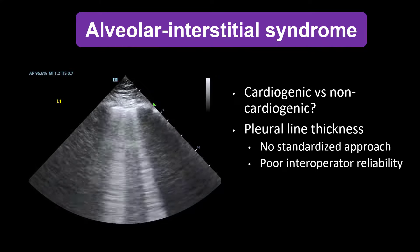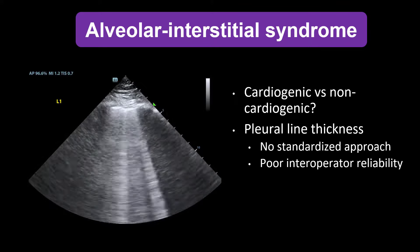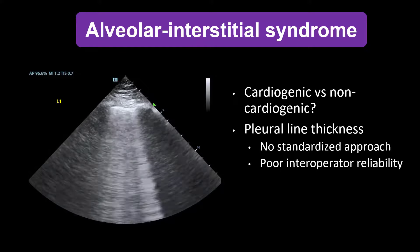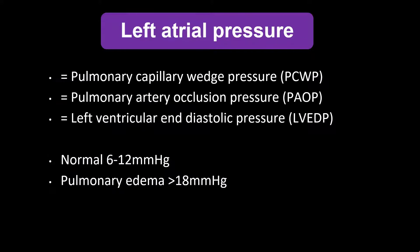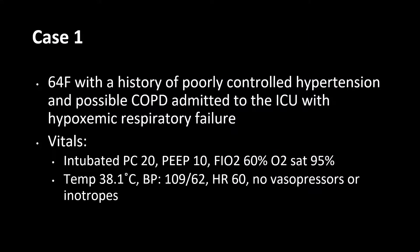What makes this challenging is that there's no standardized approach to the assessment of pleural thickness, and this is often subjective with poor interoperator reliability and a fair amount of diagnostic uncertainty. We found that LAP can be a useful tool in providing some clarity as to the etiology of B lines. LAP is also known as pulmonary capillary wedge pressure, pulmonary artery occlusion pressure, and left ventricular end-diastolic pressure. An elevation in left atrial pressure is a substrate for cardiogenic pulmonary edema. In the presence of bilateral B lines, a high LAP favors cardiogenic pulmonary edema, and a normal or low LAP favors an infectious or inflammatory process.